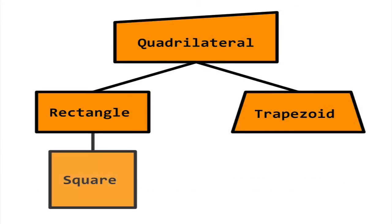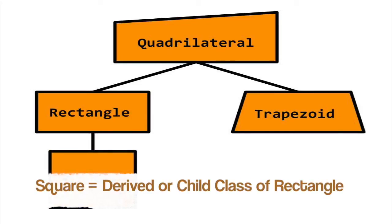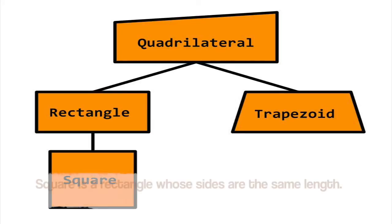For fun, let's create a class called Square. Square inherits all the attributes of Rectangle and gains the requirement of having side lengths all be the same length.